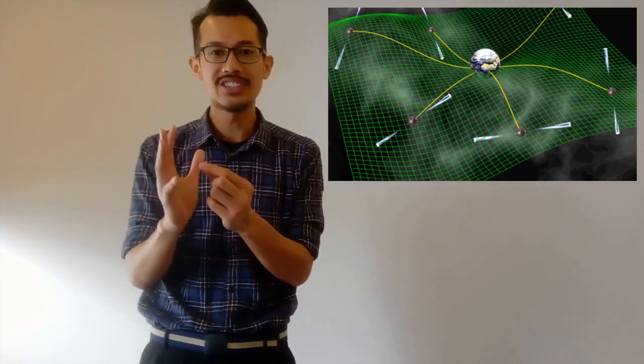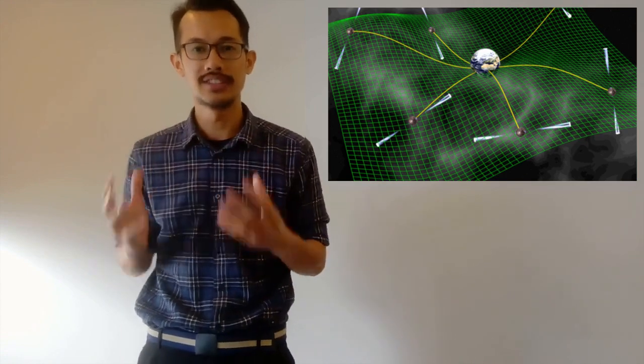When galaxies merge, the colliding supermassive black holes at their center produce ripples called gravitational waves that stretch and squeeze space, subtly altering the distance between us and the pulsar. We can detect this warping of space by looking for minute deviations in the arrival times of the pulsar's signal.